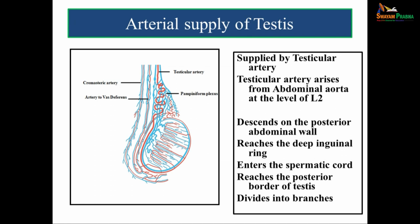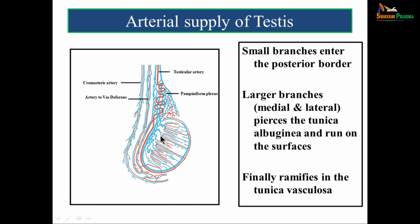The blood supply: the arterial supply of the testis is mainly by the testicular artery, which arises from the abdominal aorta at the level of L2. It descends on the posterior abdominal wall, reaches the deep inguinal ring, enters the spermatic cord, then reaches the posterior border of the testis and divides into branches. Small branches enter the posterior border; larger medial and lateral branches pierce the tunica albuginea, run on the surfaces, and finally ramify in the tunica vasculosa.